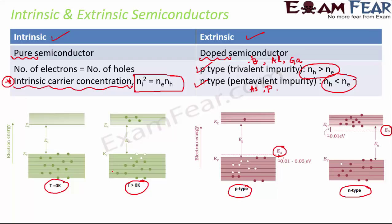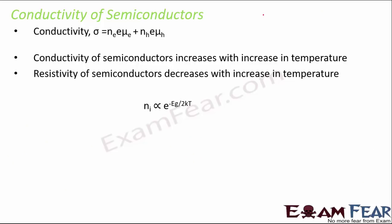This explains why it is called a semiconductor — it can conduct current but not always like conductors, so it is a partial conductor. The conductivity of semiconductors is given by σ = n_e·e·μ_e + n_h·e·μ_h, where conductivity depends on both electrons and holes.